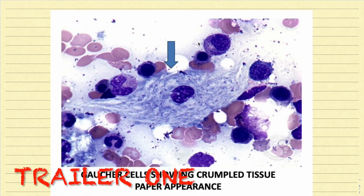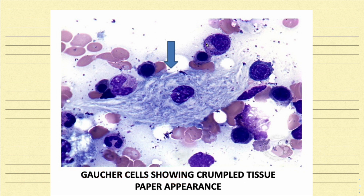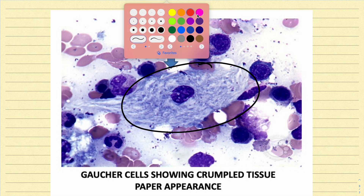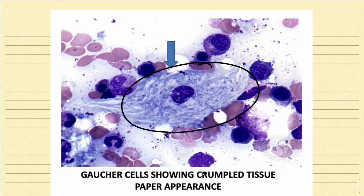This is the classical Gaucher cell showing the accumulation of glucocerebroside within the lysosomes. Because of this bilayered stack configuration, it looks as if paper has been crushed and then straightened out again — showing the classical crumpled tissue paper appearance. You can appreciate it as if you have taken a piece of paper, crushed it, and when you open it again, the creases are visible.